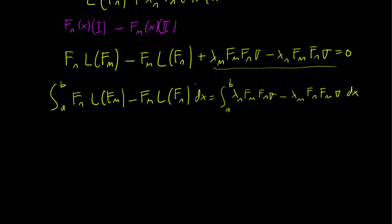Now, L is self-adjoint since both eigenfunctions obey the same boundary conditions, and so this entire left-hand side term is 0.